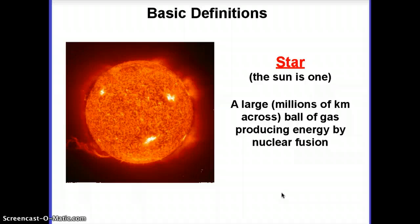Stars, by definition, produce energy by nuclear fusion. There are other things in space that are balls of gas, but what makes a star different is that it makes energy by nuclear fusion — that is, it's sticking small atoms together to make larger ones. Later on in the semester we'll talk more about what that means and how a star makes energy by nuclear fusion.